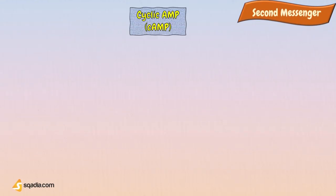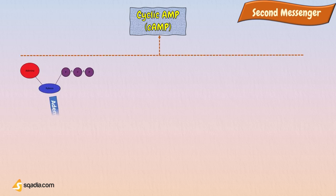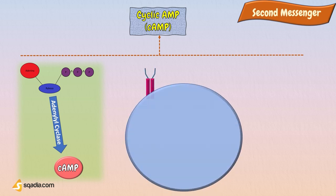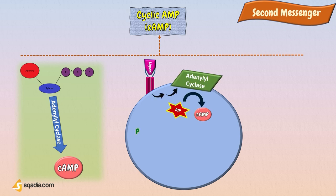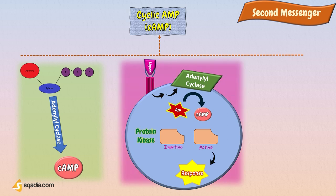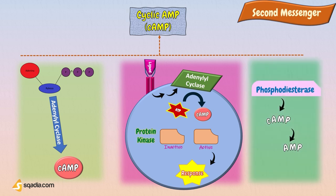Another important second messenger is cyclic adenosine monophosphate, or cyclic AMP. An enzyme called adenylyl cyclase converts ATP into cAMP, removing two phosphates and linking the remaining phosphate to the sugar in a ring shape. Cyclic AMP activates cyclic nucleotide-dependent protein kinases that catalyze the phosphorylation of proteins, changing their conformation and altering their activity. cAMP signaling is turned off by enzymes called phosphodiesterase, which break the ring of cAMP and convert it into adenosine monophosphate, AMP.